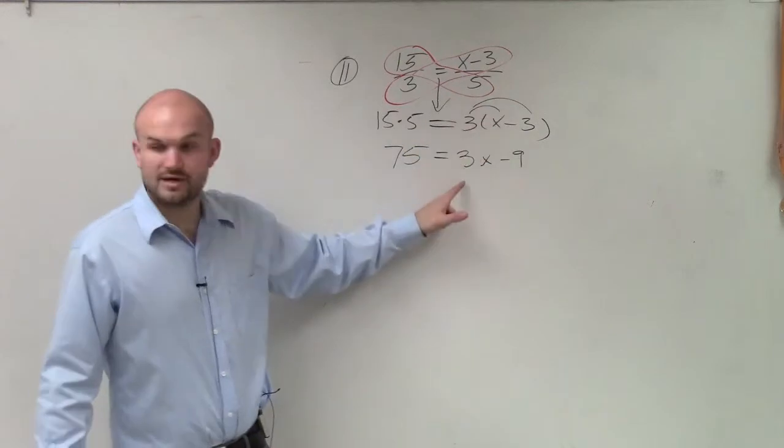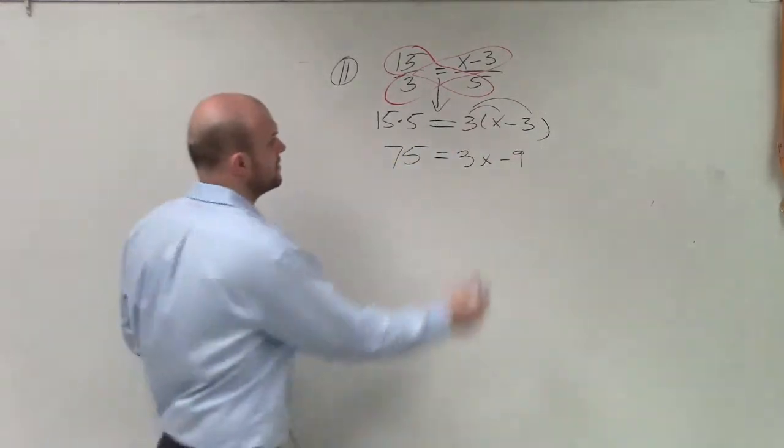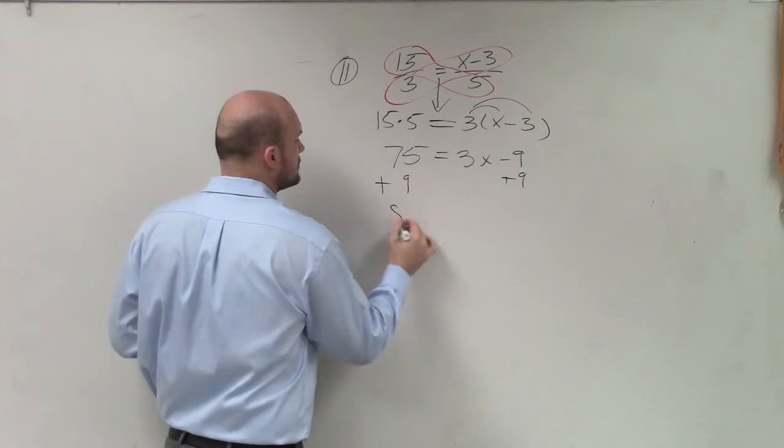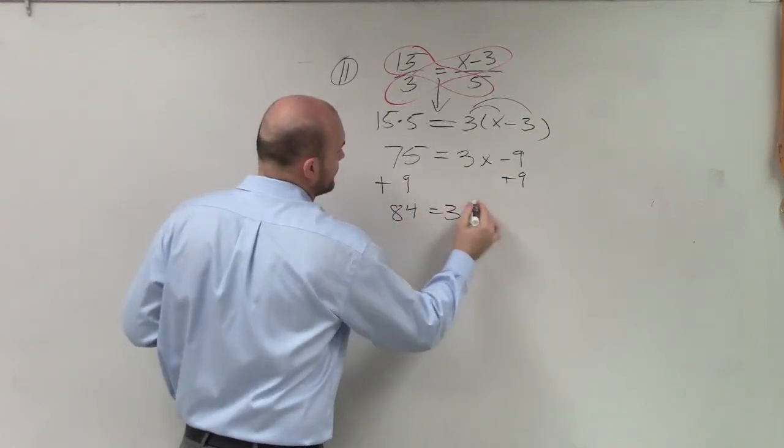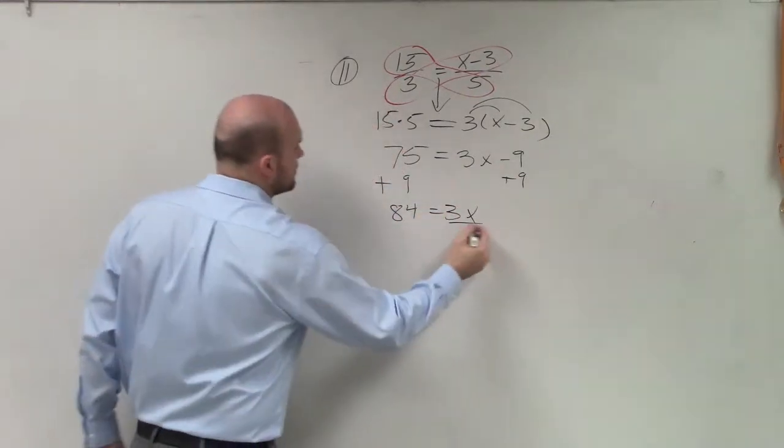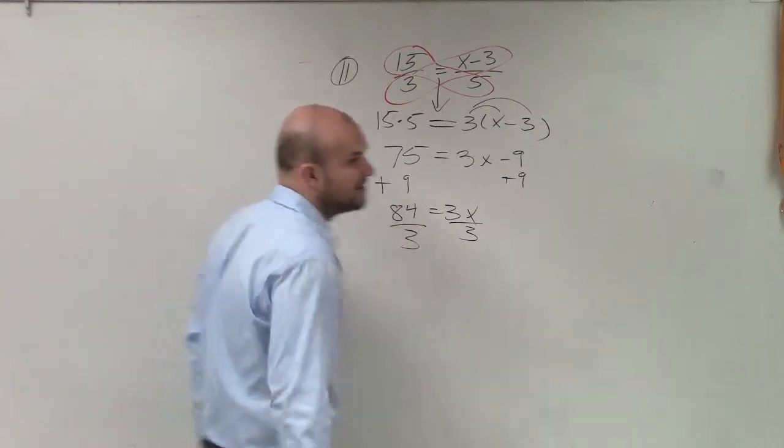3 times x is 3x, and then 3 times negative 3 is 9. Then I'll add 9. 84 equals 3x. Divide by 3.